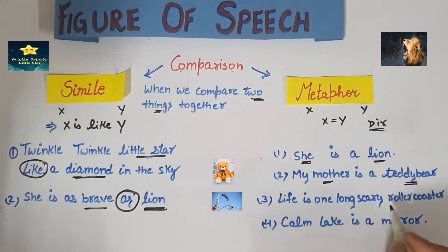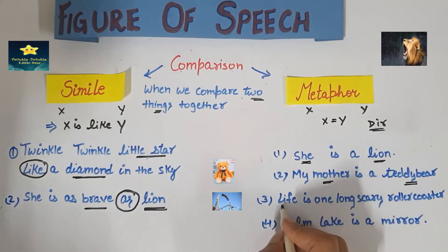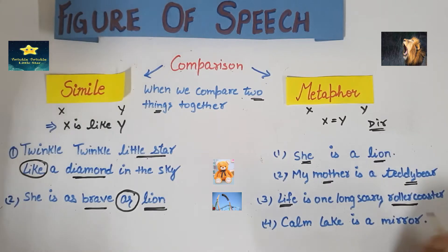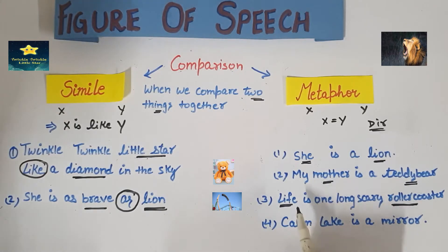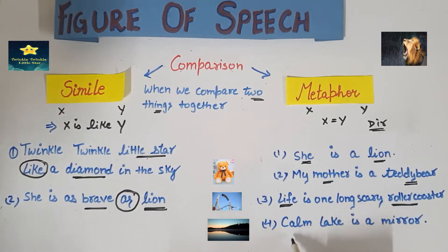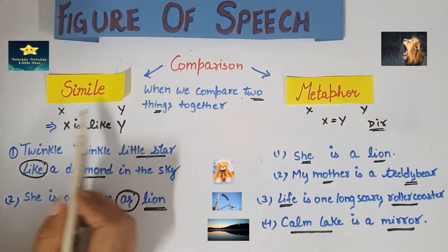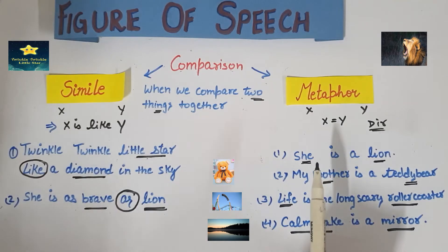'Life is one long scary roller coaster.' Here we are comparing life to a scary roller coaster — just as a scary roller coaster is thrilling, life is sometimes very scary, sometimes exciting, with lots of ups and downs. We are directly comparing life to a roller coaster. Similarly, 'Calm lake is a mirror' — comparing a calm lake directly to a mirror. So metaphor and simile are very easy to understand. In simile we use 'like' and 'as'; in metaphor we do not use 'like' or 'as.'